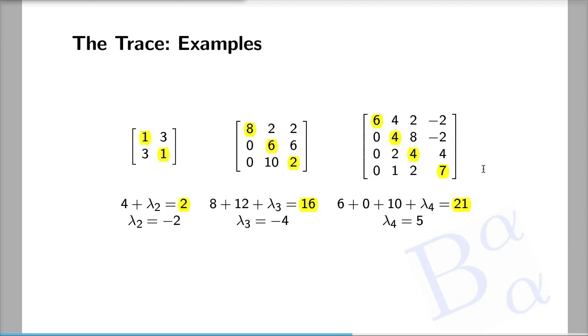Therefore, we have three out of the four eigenvalues: 6, 0, and 10. Therefore, the last eigenvalue can be determined from the trace and it is five. This concludes our discussion of the trace feature. Thank you.